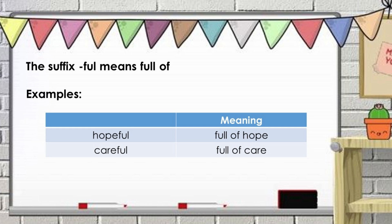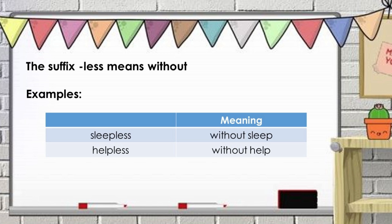Here are some examples of suffixes. The suffix ful means full of. Examples: hopeful, meaning full of hope; careful, meaning full of care. Next, we have the suffix less, which means without. Examples: sleepless, meaning without sleep; helpless, meaning without help.